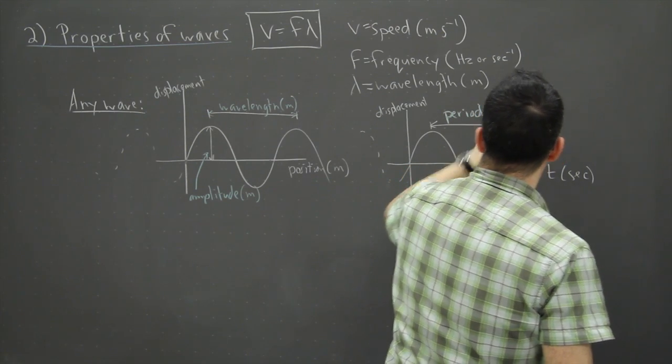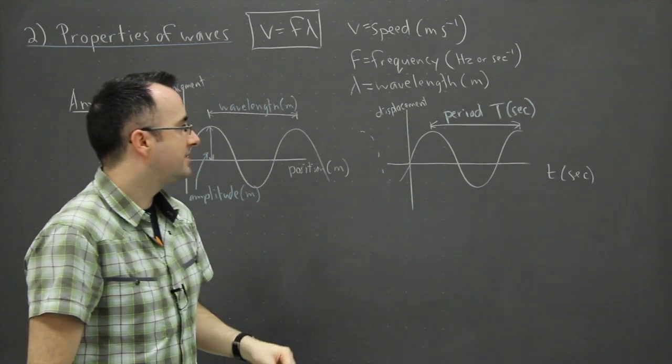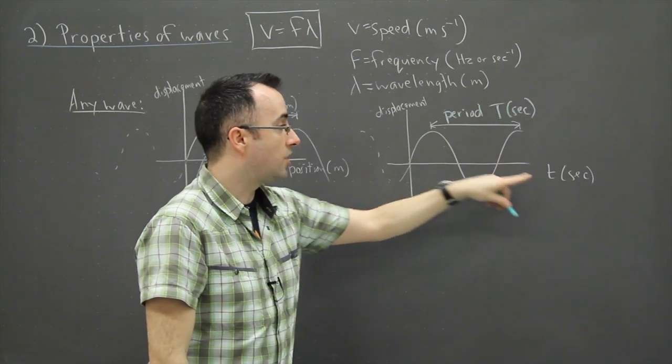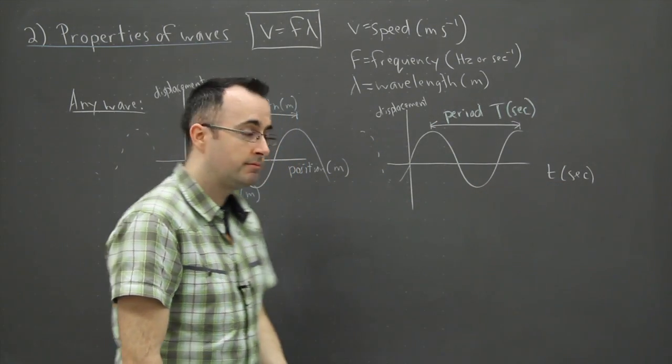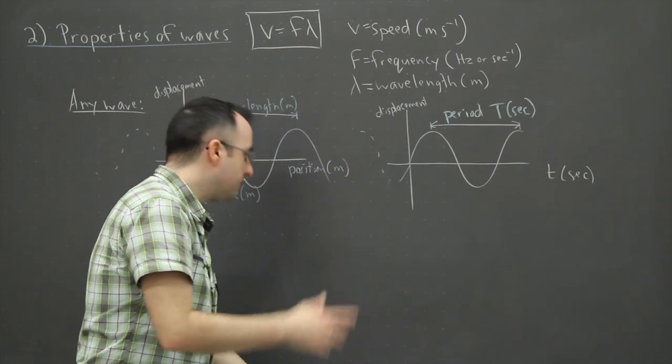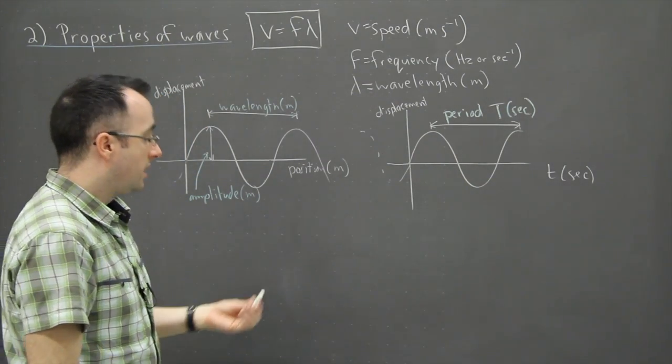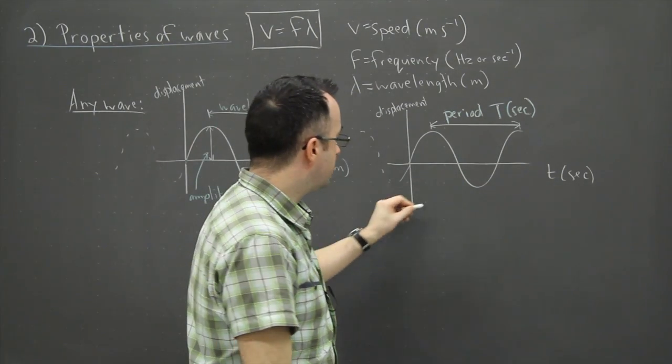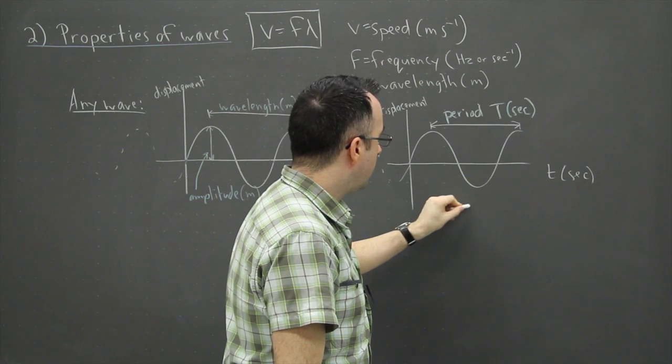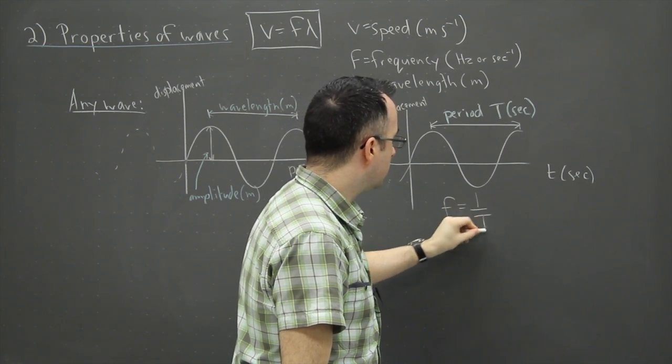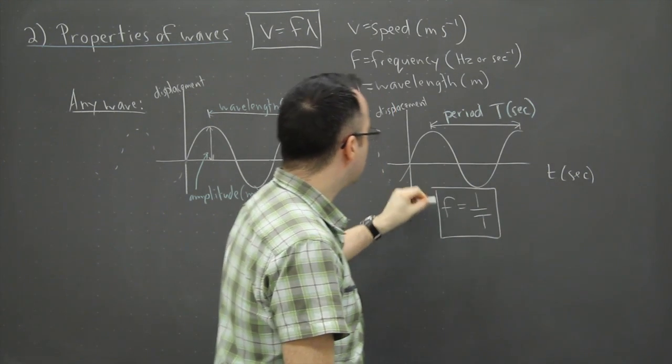We have the period T in seconds—that's going to be this distance on a time graph. That's the different things we might want to know about.